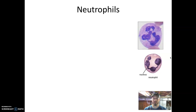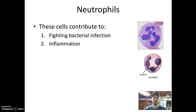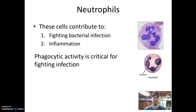The last kind of granulocyte is the neutrophil. Neutrophils contribute to fighting bacterial infection and also contribute to inflammation. One of the ways they function is to release their granules through a process called degranulation, and those chemicals can stimulate processes and harm bacteria. But neutrophils, like eosinophils, primarily act through phagocytic activity — neutrophils act as phagocytes on bacteria primarily, while eosinophils primarily act on viruses and helminths.